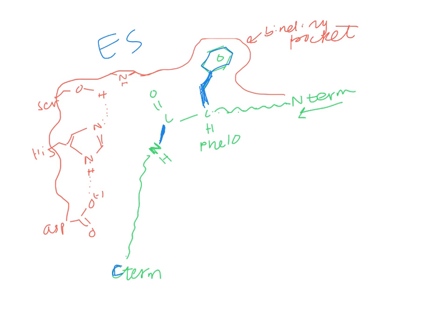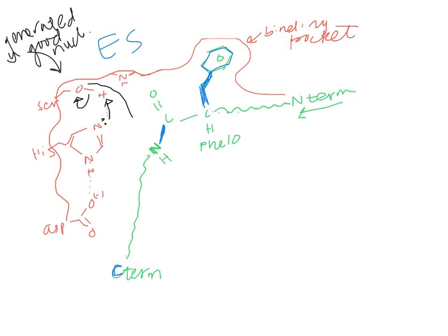The first thing that happens is we generate a nucleophile. Histidine grabs this hydrogen off the serine, and those electrons move to the serine oxygen. Now we have generated a good nucleophile. This nucleophile is going to attack the electrophile, and those electrons will go up to that oxygen.